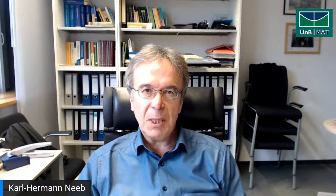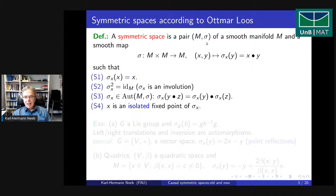What are symmetric spaces? Symmetric spaces appear first in the work of Élie Cartan in the beginning of the 20th century, basically as Riemannian coset spaces of Lie groups. The axiomatic setting for symmetric spaces was introduced much later by Ottmar Loos. One looks at a smooth manifold M and wants to have something like a multiplication on the manifold — written with a dot notation — where the maps sigma_X resemble reflections.